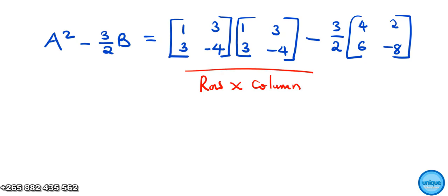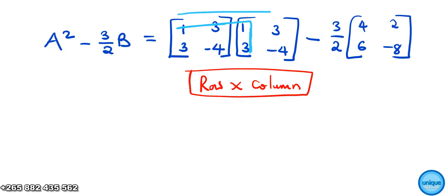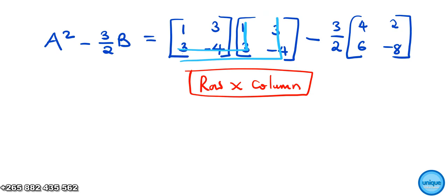For matrix multiplication, the first row corresponds to the first column, and the same row corresponds to that column. The same applies here — row times column. Let's see how we can do it.